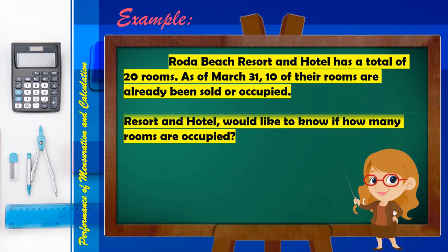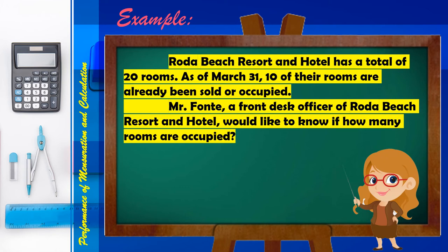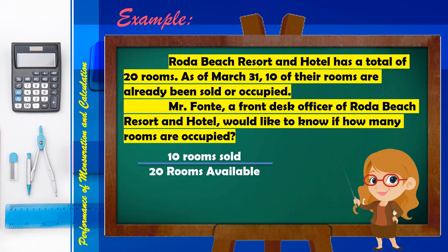Let's have an example. A resort has a total of 20 rooms. As of March 31, 10 of the rooms have already been sold or occupied. To find the room occupancy percentage, we use the formula: 10 divided by 20 times 100. That equals 0.50 times 100, which is 50%. Meaning 50% of the rooms are occupied at the beach resort and hotel.